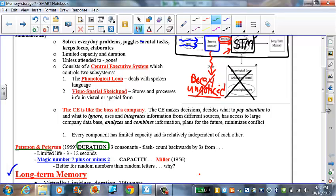Peterson and Peterson did the famous study in the 1950s. They flashed consonants on the screen, something like TQB, and then they had their subject count backwards from a number by threes. So they might say 167,